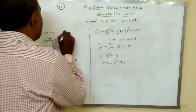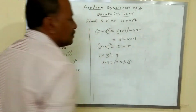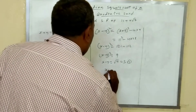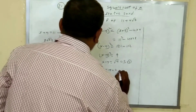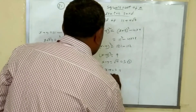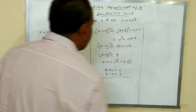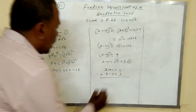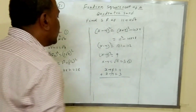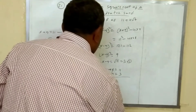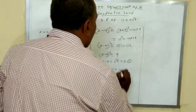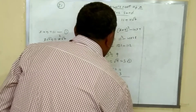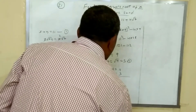Take x plus y equals 11 as the first equation and x minus y equals 3 as the second equation. Adding both equations: the y terms cancel, giving 2x equals 14, so x equals 7.